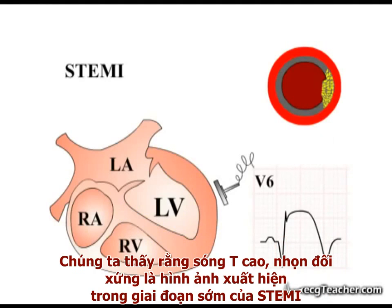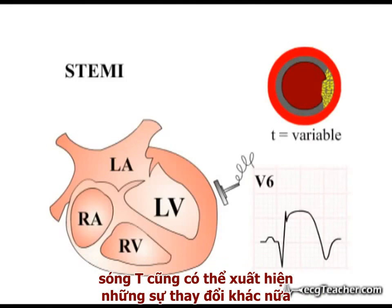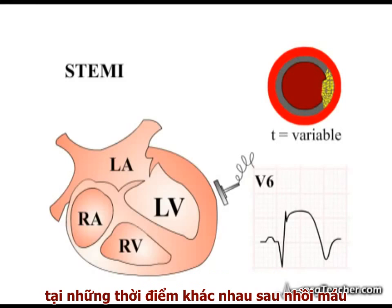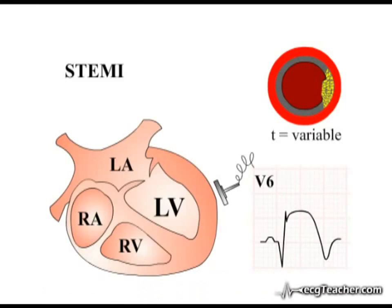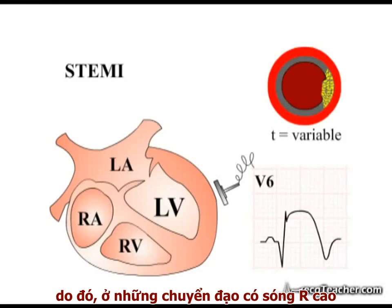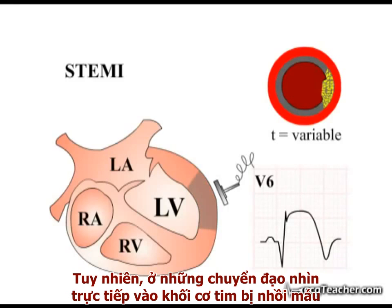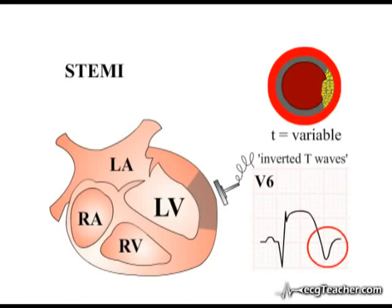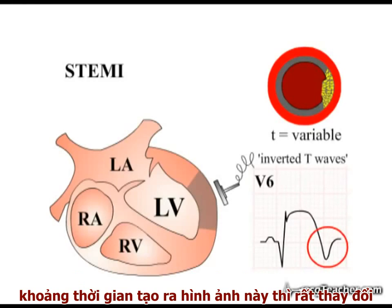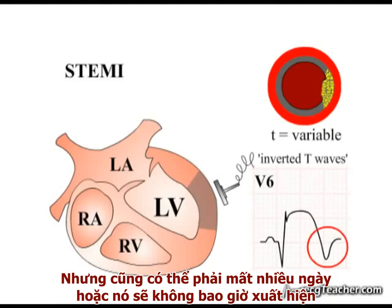Tall symmetrical peaked T-waves are an early ECG finding in STEMI. As the process of infarction evolves, the T-waves may demonstrate a further abnormality developing at a variable time point after occlusion. In a given ECG lead, T-waves are generally concordant with the QRS complex, so that in a lead with a dominant R-wave such as V6, the T-waves are normally upright. However, in a lead looking directly at an acute MI, the T-waves may flip and become inverted. The timing of this phenomenon is highly variable — it may occur early in the hours following vessel occlusion, may take days to develop, or may not occur at all.